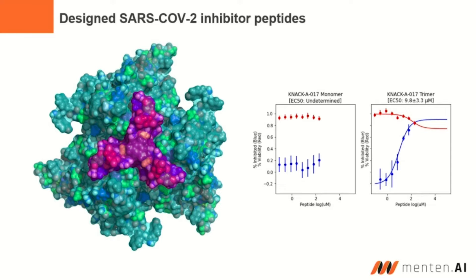We designed a number of proteins and tested them against the pseudovirus and then the actual virus. We were very pleased with the results. Not only did it work, but we actually saw a benefit by using our symmetric structure. We can see that we are actually inhibiting the virus from entering the cell.